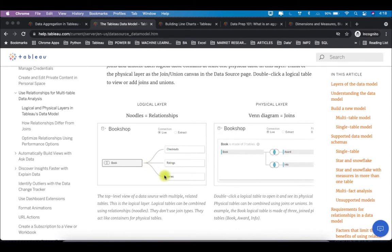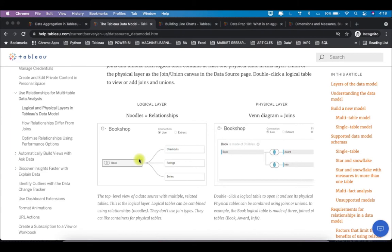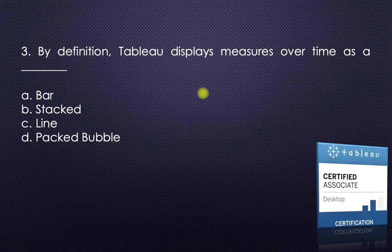Relationships are represented by noodles. Then they ask which layer — and the heading on that page says 'logical layer'. So the answer is the fourth option: noodles and logical layer.